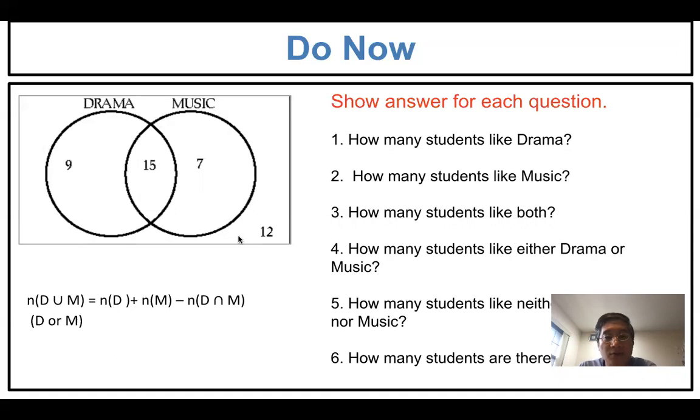So how many students like drama? 9 and 15, total 24. How many students like music? 15 and 7, that's 22. How many students like both? Both is intersection, right? Intersection here, 15.